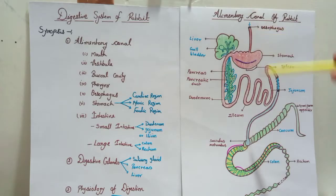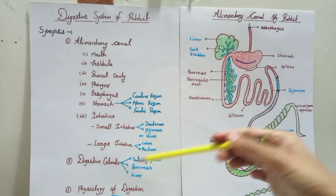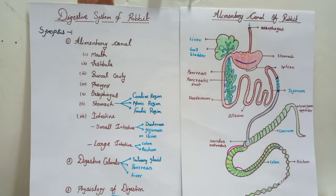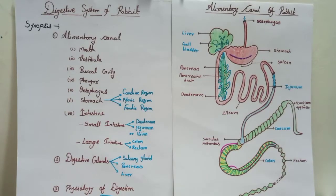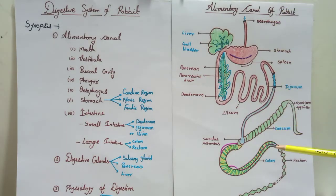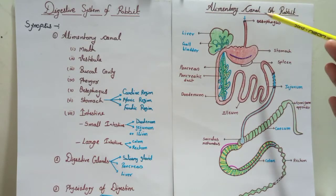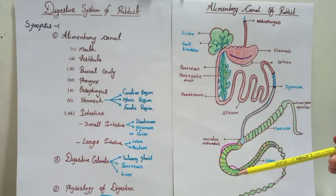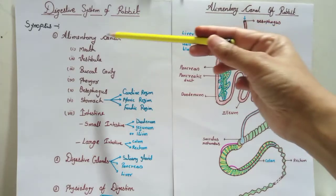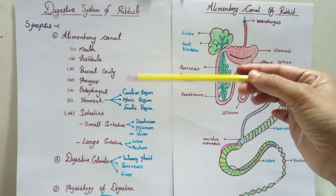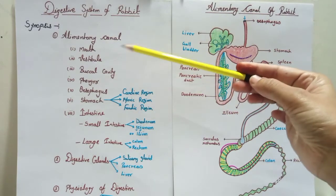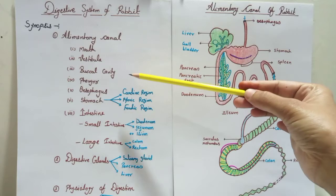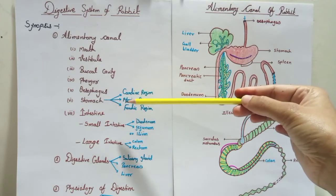In the digestive system there are two components: first is the alimentary canal, which extends from here to here, and second is the digestive gland. The alimentary canal is a long tube-like structure, as seen in the diagram, and it extends from the mouth to the anus.